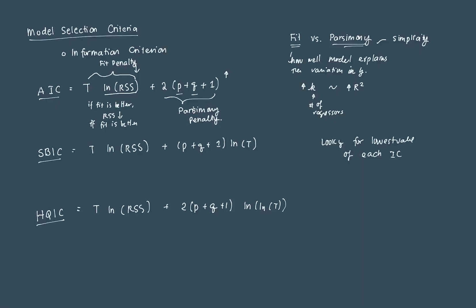If you look at the SBIC, the fit penalty is the same. But you'll notice that the parsimony penalty is scaled higher by ln(T). So in general, the SBIC penalizes models that use more lags. Then if you notice, the HQIC is somewhere in between the AIC and the SBIC.